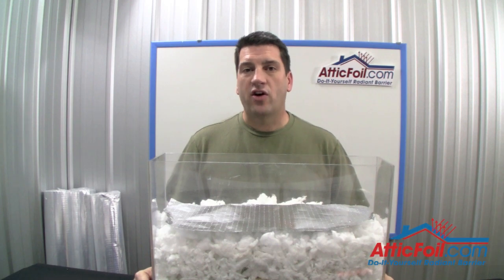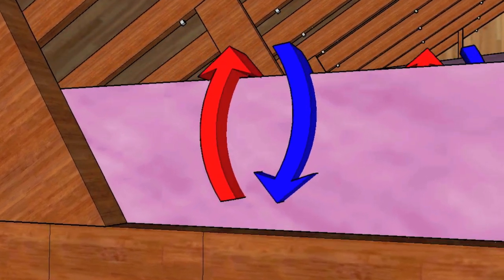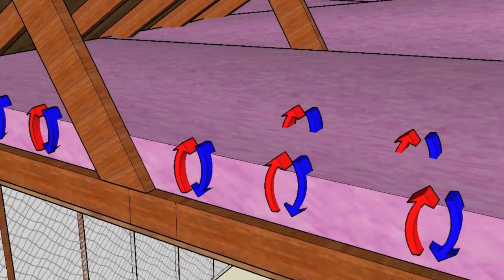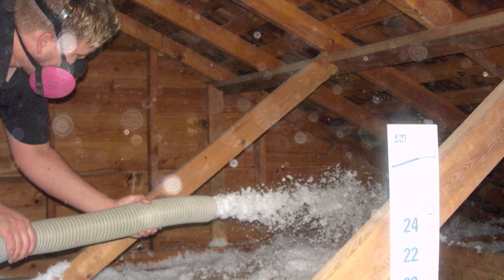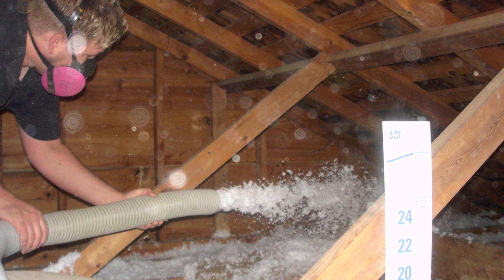The second way installing attic foil reduces heat loss is by minimizing convective looping within the insulation. What this means is that installing a radiant barrier will help make your existing insulation even more efficient. Traditional insulation works to reduce heat loss by slowing conductive heat flow. This is called R value.